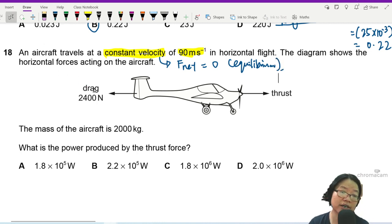Diagram shows horizontal forces acting on the aircraft. The mass of the aircraft is given. What is the power produced by the thrust force?